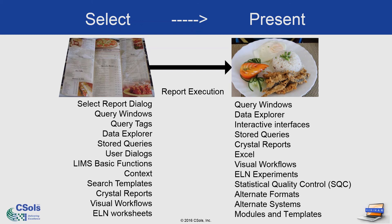For example, select report dialogs use query tags. Query tags can reference themselves. Data Explorer can use query tags to open and retrieve data in the Data Explorer. Stored queries, similarly. User dialogs can reference query tags. So if we were to actually connect all of the dots, this would turn into a very complex network of possibilities.